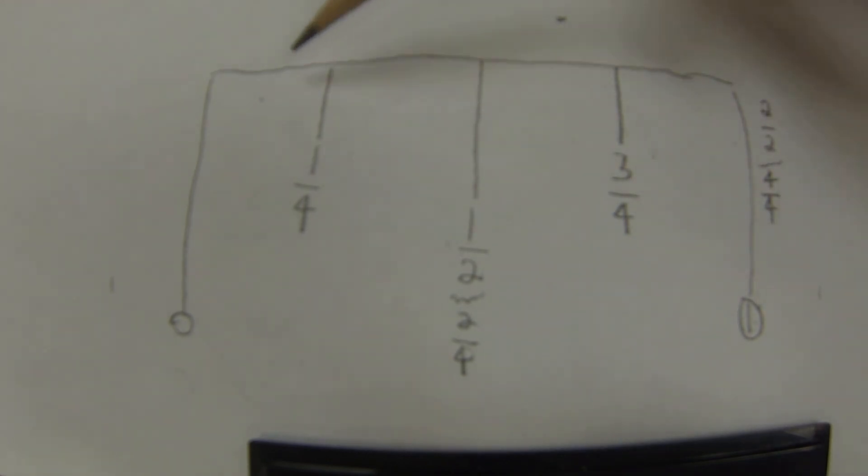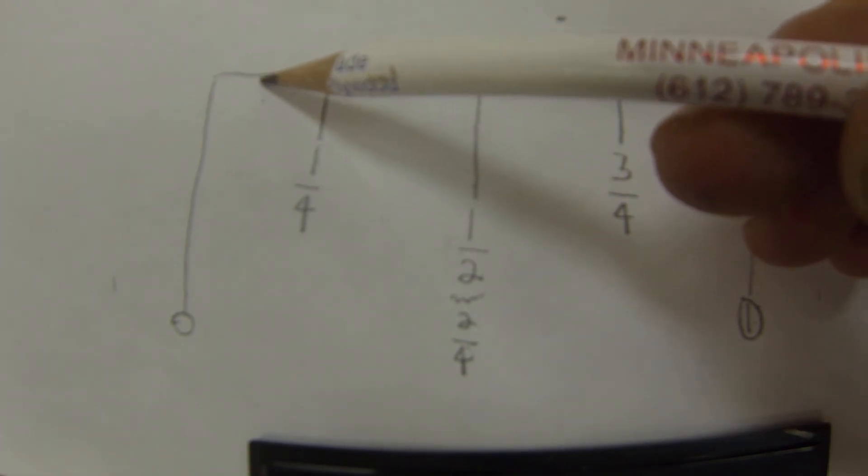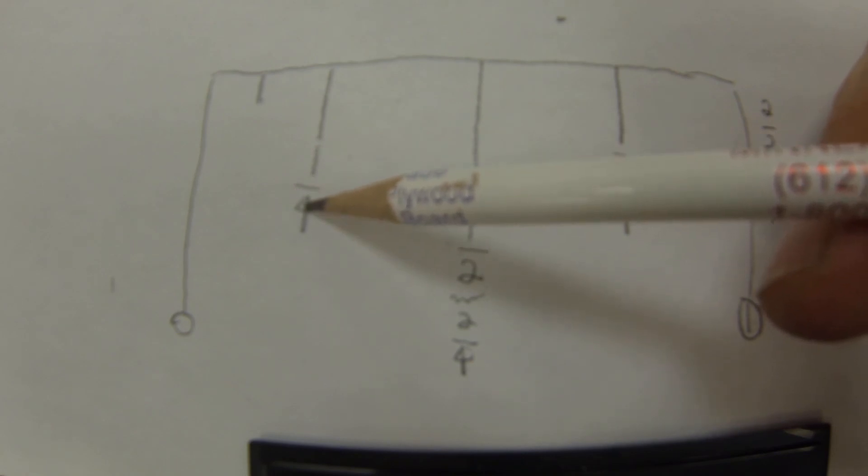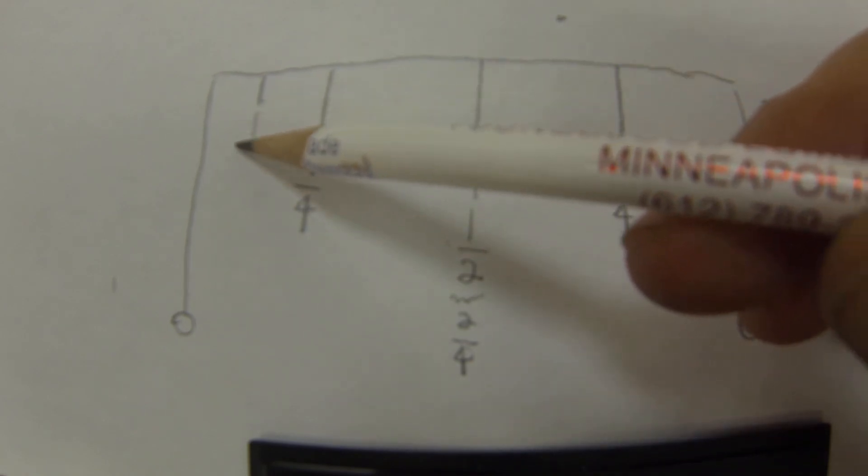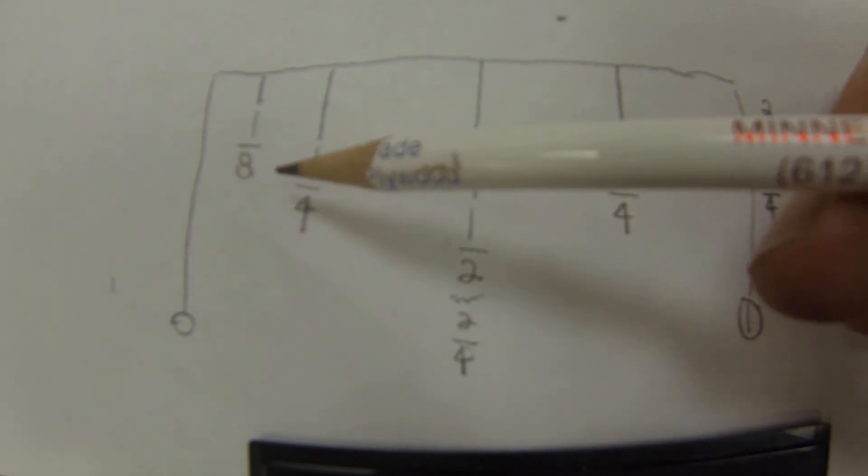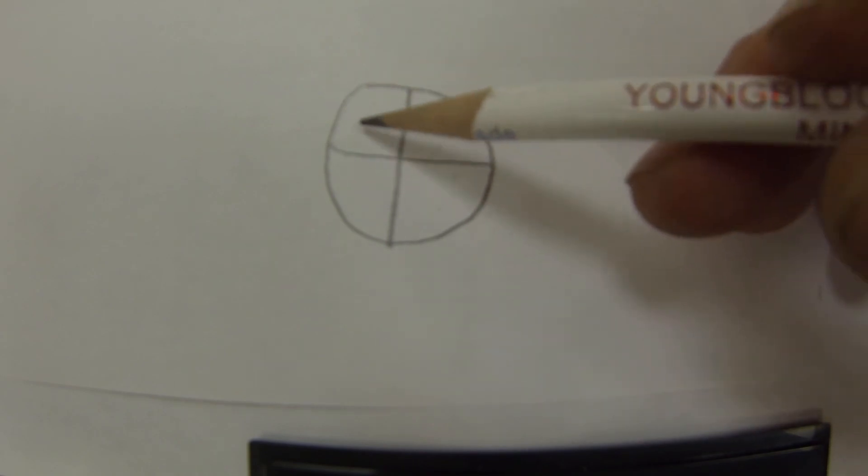Looking at this space over here between zero and one fourth, we're going to need to break that down even smaller. So the next logical division would then be to double this bottom number to an eighth. So one eighth. We've got to think about it like this. As we start to look at how many pieces we've got here.